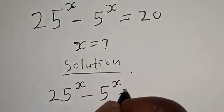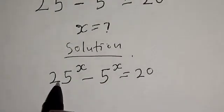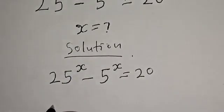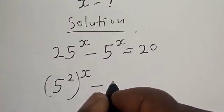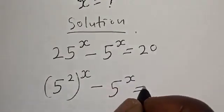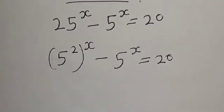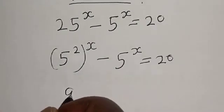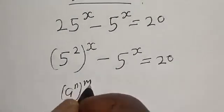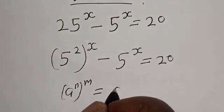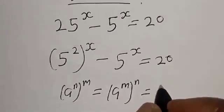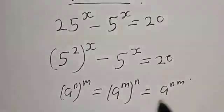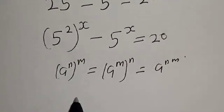The original equation is: 25 raised to power x minus 5 raised to power x is equal to 20. Now, 25 raised to power x is the same thing as 5 squared raised to power x, minus 5 raised to power x, equals 20. Using the identity: a raised to power n raised to power m equals a raised to power nm, we make use of this identity.